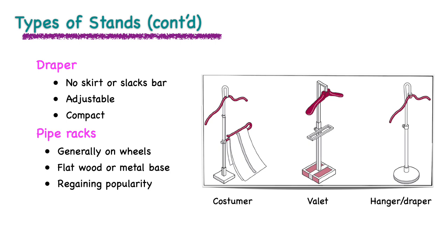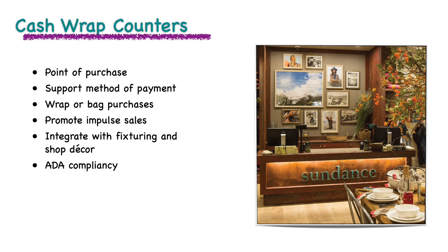Pipe racks are generally on wheels and have a flat wood or metal base. They are beginning to regain popularity within the industry. Cash wraps are the point of sale. This area must be ADA compliant to accommodate those with disabilities. The cash wrap presents the opportunity for last-minute add-ons.